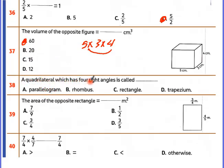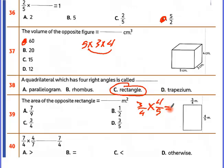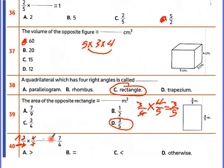A quadrilateral which has four right angles — it's a rectangle. The area of the opposite rectangle: length times width = 3 over 4 times 4 over 5. Simplify: 4 and 4 cancel. The result is 3 over 5. Also, 4 over 7 minus 7 over 7 — since 7 over 7 equals whole 1, and improper fraction seven over four is greater than 1, so choose less than. Okay.